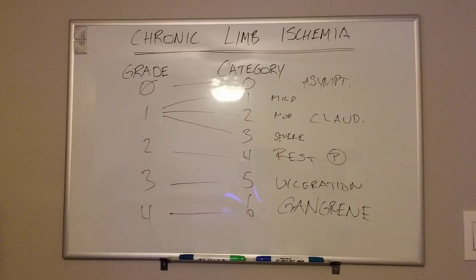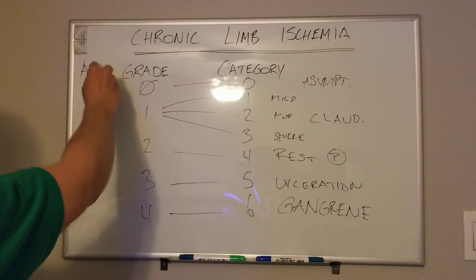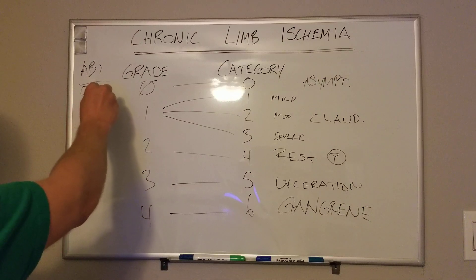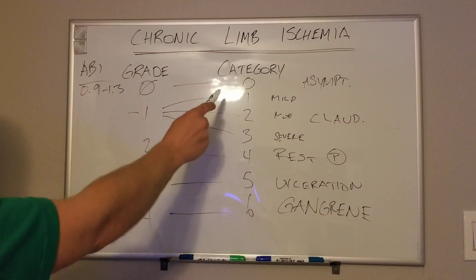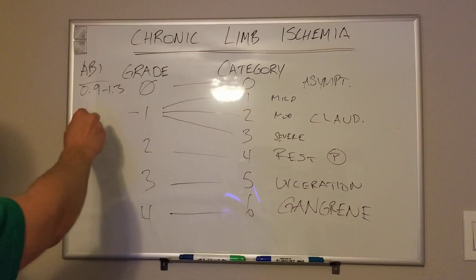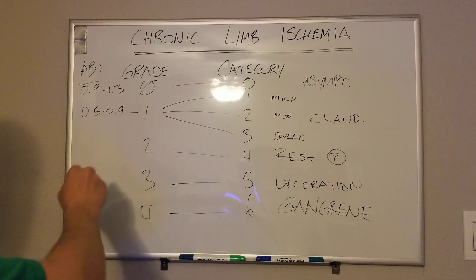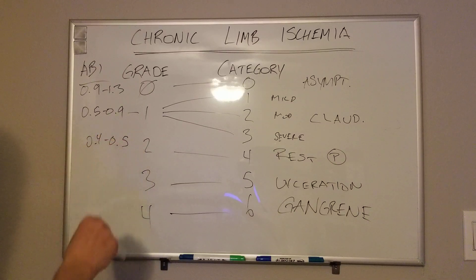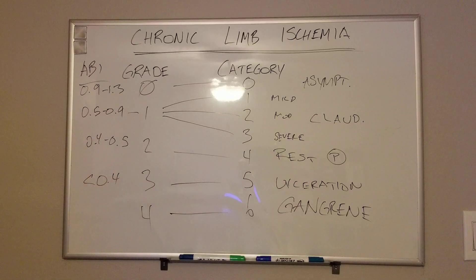So those are the different grades and categories of Rutherford's chronic limb ischemia classification. One more thing to mention: ABIs — ankle-brachial index — which we discuss in a separate video. You can use a simple ABI to deduce where someone falls in this classification. An asymptomatic patient will be normal: 0.9 to 1.3 ABI. Claudicants — categories one through three — are roughly 0.5 to 0.9. Rest pain and beyond is 0.4 to 0.5, and grade three and four is definitely lower than 0.4. These patients may have a toe pressure of around 20 mmHg — really bad inflow disease to the foot. That's Rutherford's classification.